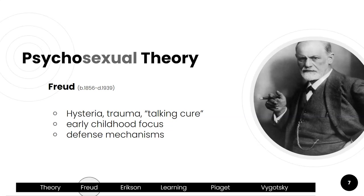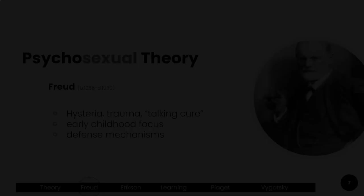In his theory, Freud emphasized early childhood. He believed whatever happens in early childhood — from zero to about five, six, or seven — shapes who you are. And because of environmental stressors, the child will learn how to deal with these stressors through defense mechanisms, which we'll talk about in a moment.